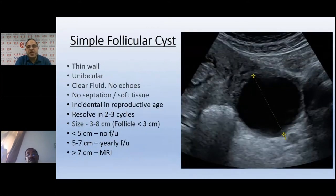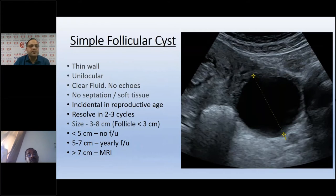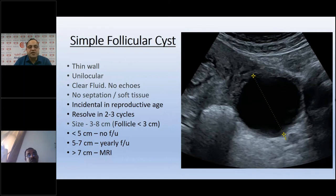A simple follicular cyst on ultrasound shows thin or imperceptible wall, unilocular, clear fluid, no internal echoes, no septations, no soft tissue. Very common and incidentally seen in reproductive age group — resolves in 2–3 cycles, size 3–8 cm. Below 3 cm it is called a follicle; beyond 3 cm, a follicular cyst. Management: below 5 cm no follow-up needed; 5–7 cm yearly follow-up; above 7 cm, consider cystic neoplasm such as cystadenoma or cystadenocarcinoma and work up with MRI.